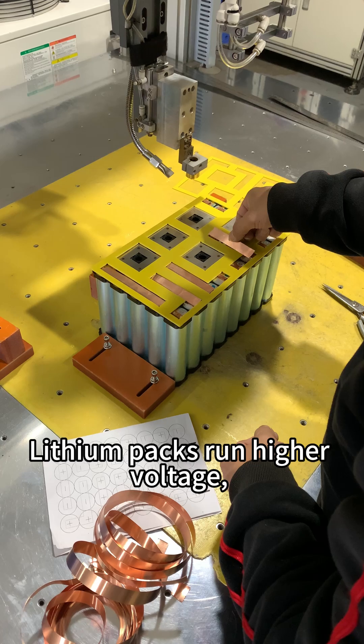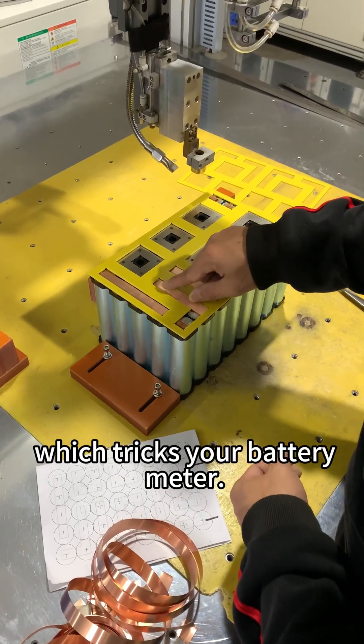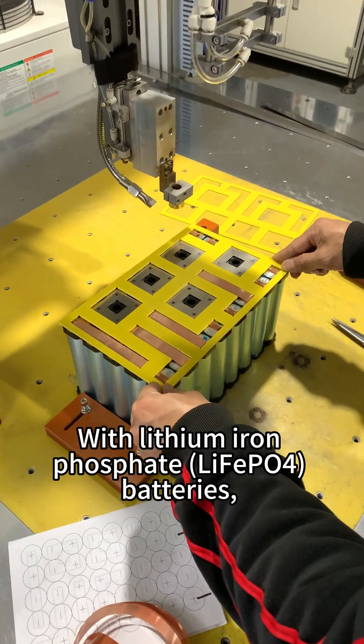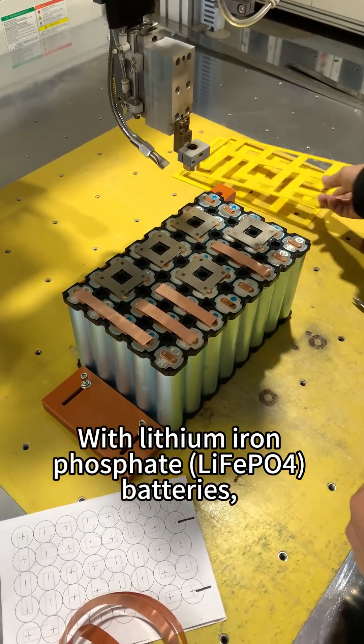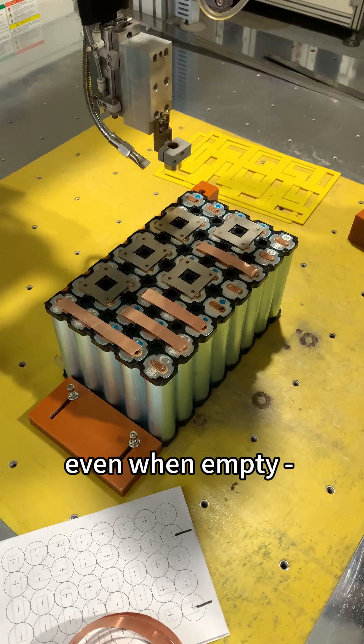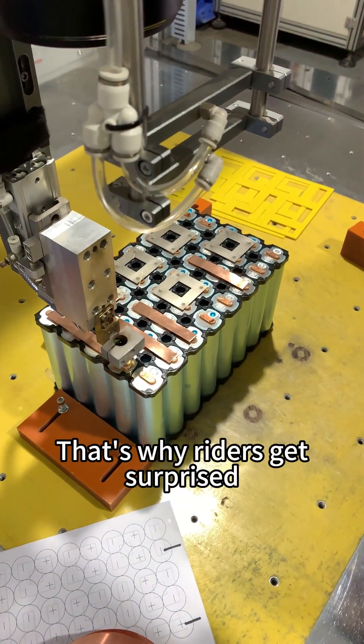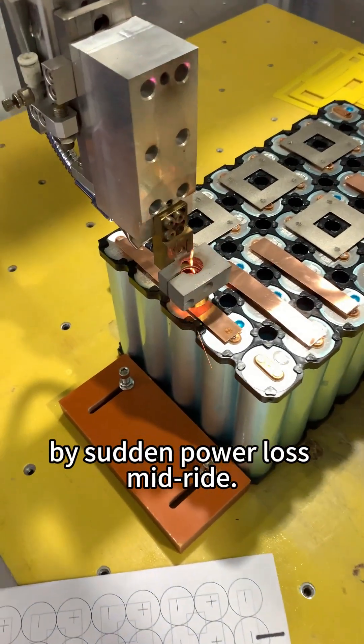Lithium packs run higher voltage, which tricks your battery meter. With lithium iron phosphate LiFePO4 batteries, the voltage stays flat even when empty. Your gauge might still show full. That's why riders get surprised by sudden power loss mid-ride.